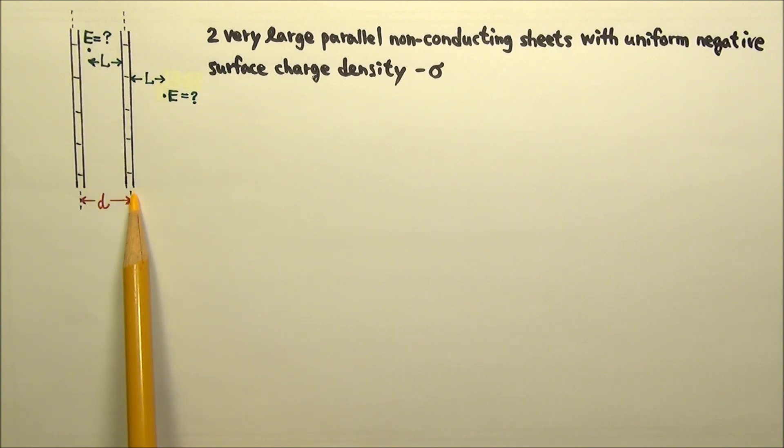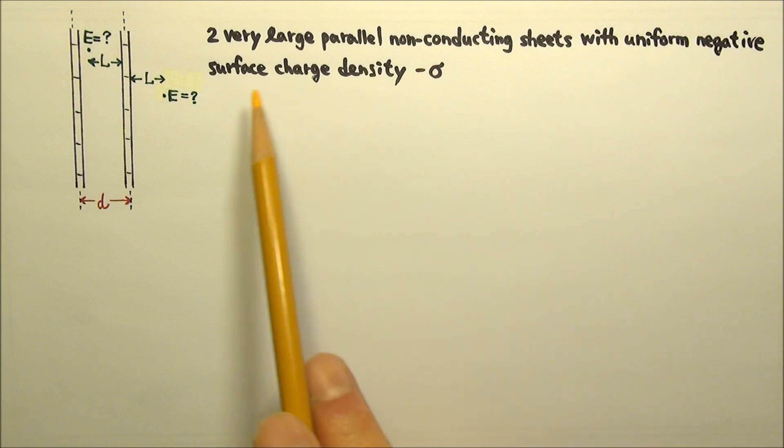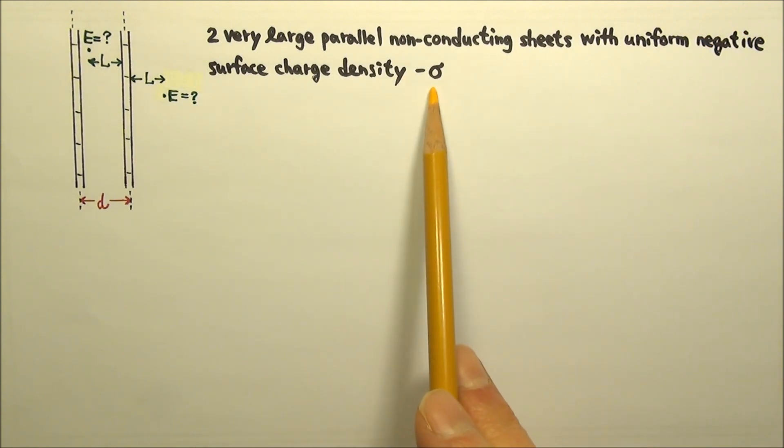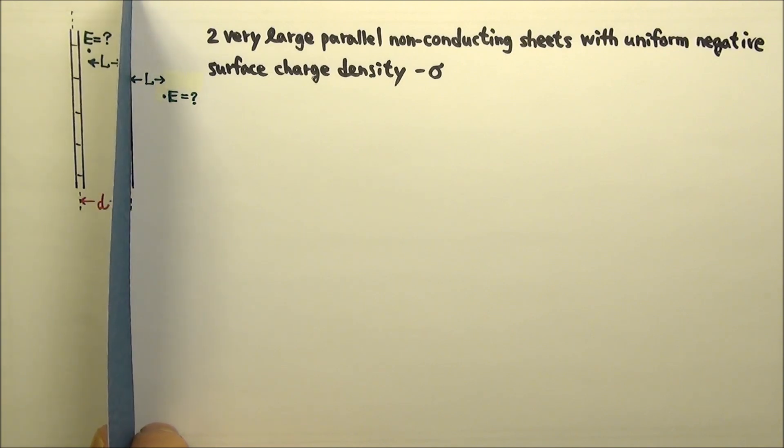Consider two very large parallel non-conducting sheets with uniform negative surface charge density negative sigma. Here these sheets are drawn edge-on, so they are perpendicular to the screen.